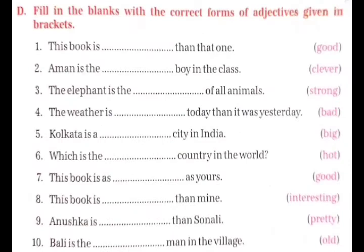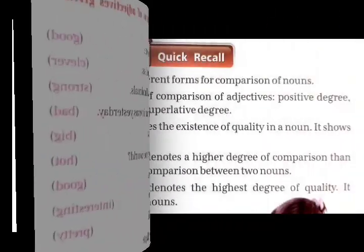Exercise D: Fill in the blanks with the correct forms of adjectives given in brackets. Brackets में दिये गया adjective के correct form से fill कीजिये. जैसे first is: 'This book is ___ than that one' — good दिया गया है, तो correct form होगा: 'This book is better than that one'.